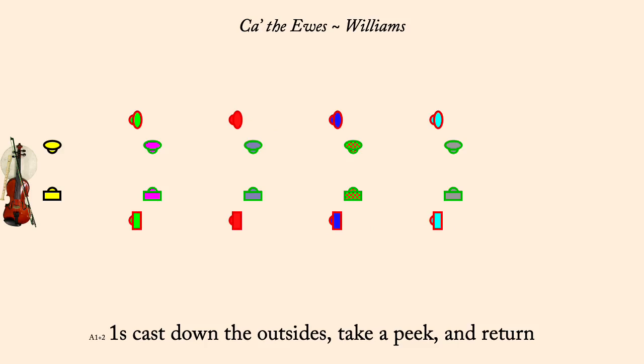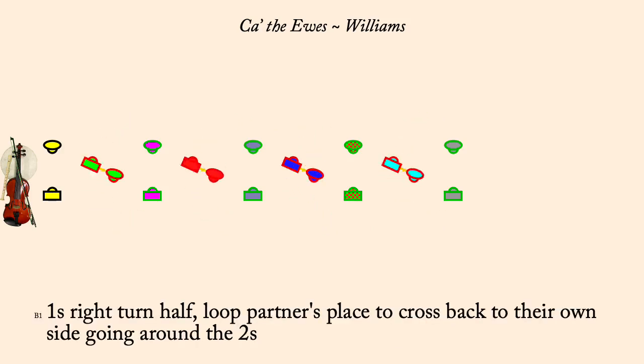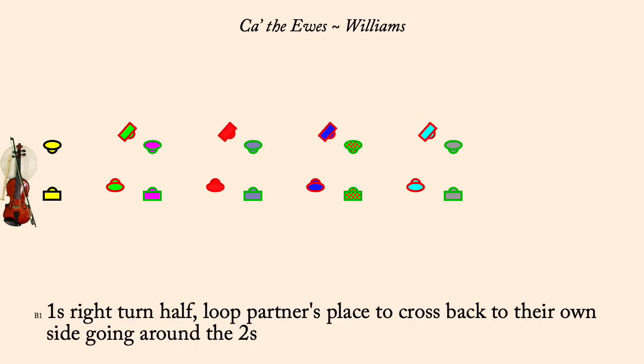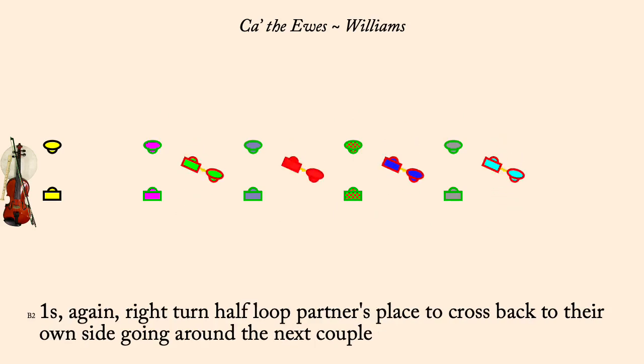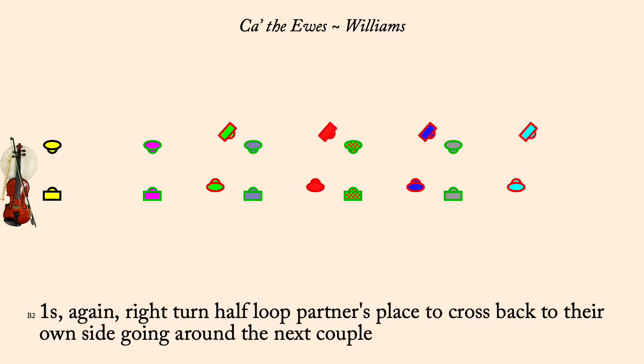One's right, turn half, loop partners, place, cross, loop, couple below. Again, one's right, turn half, loop, cross, loop, couple below.